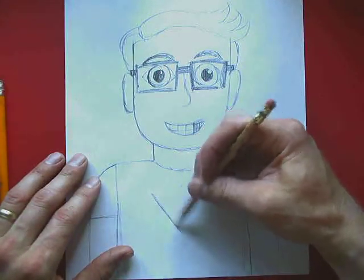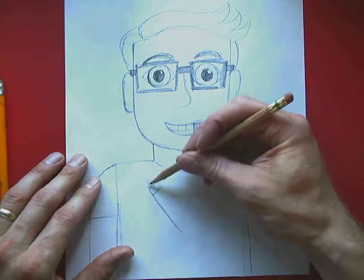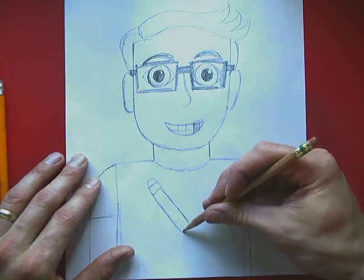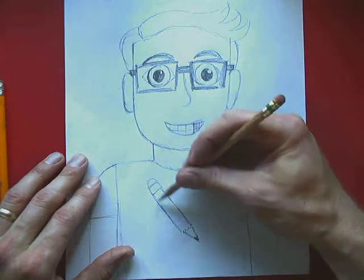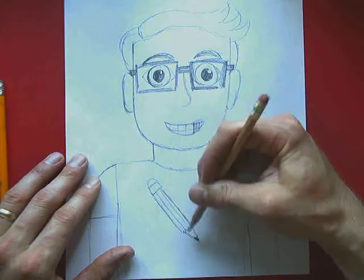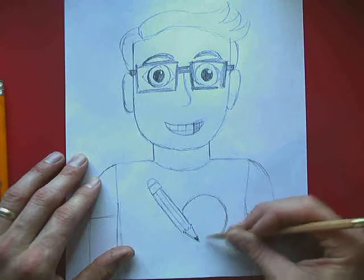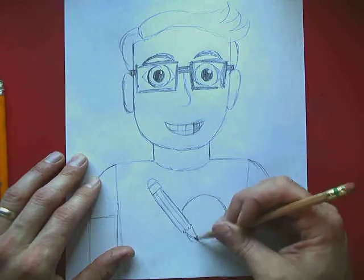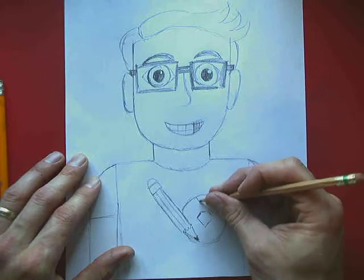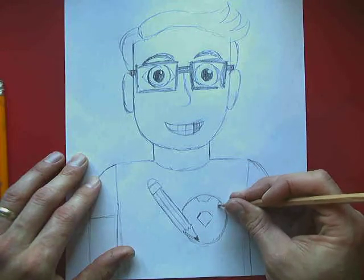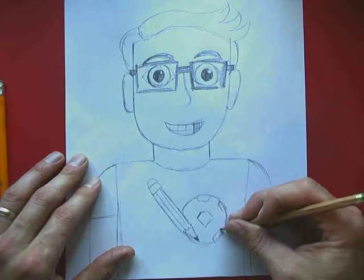And then a cool thing that I like to do with my shirts is to think about something I could put on there that would tell people about me. So like I love to draw. So I'm going to put a pencil on mine. Maybe you love to play soccer and you want to put a soccer ball on yours. Or maybe you love to sing and you want to put a microphone on yours.